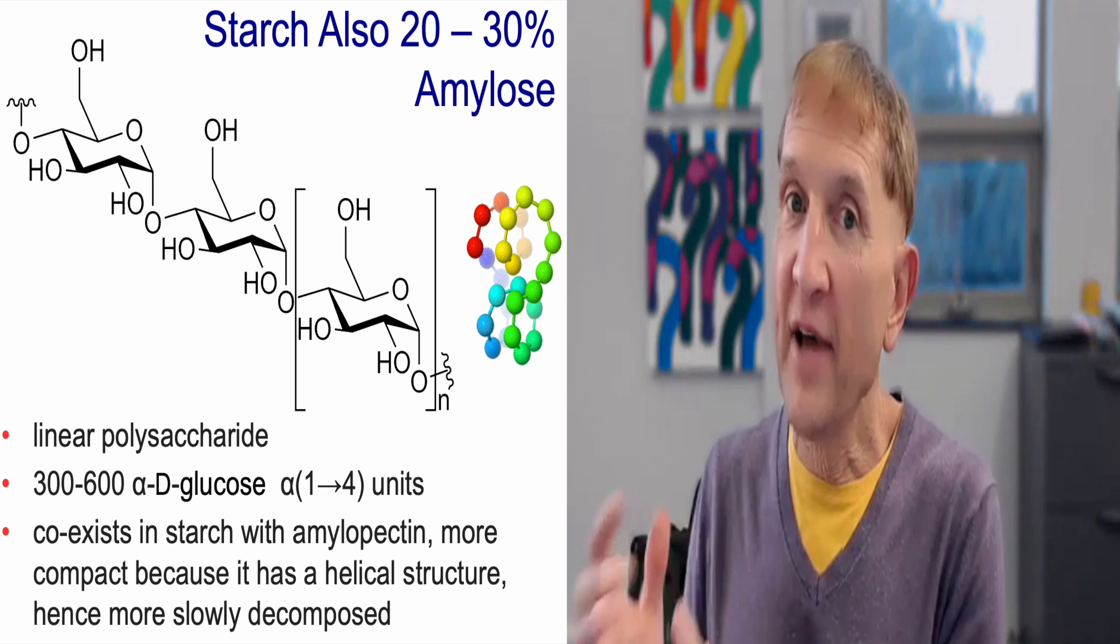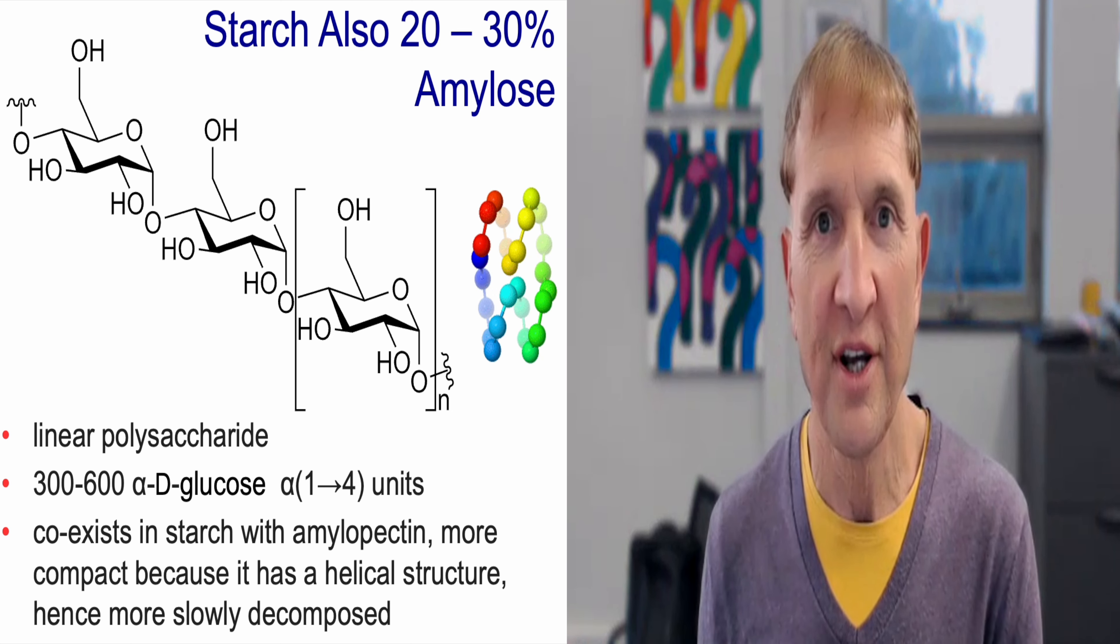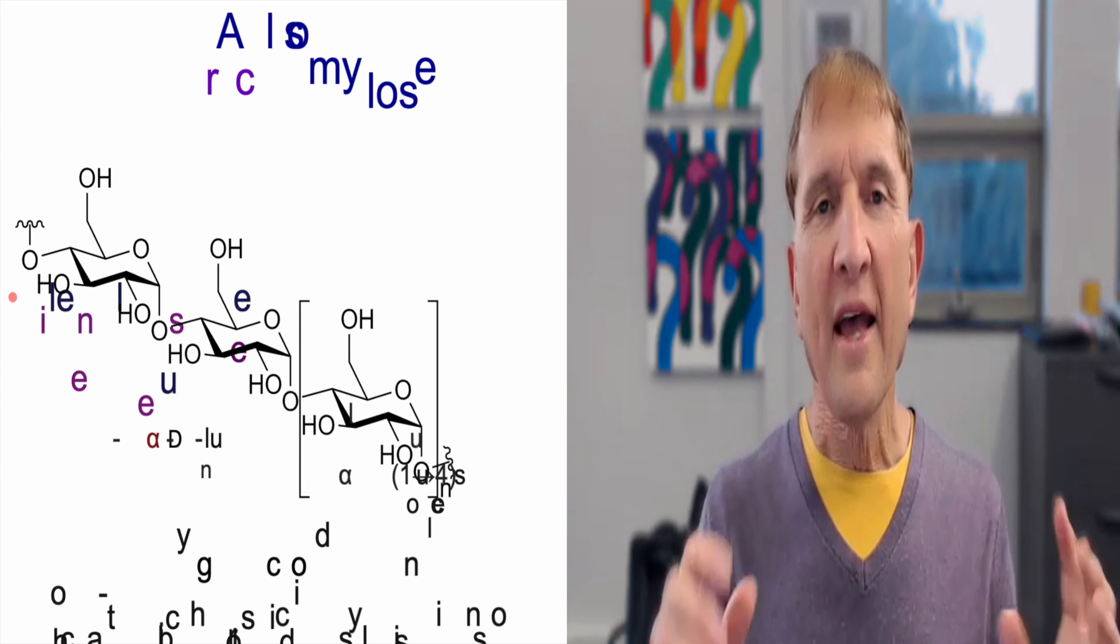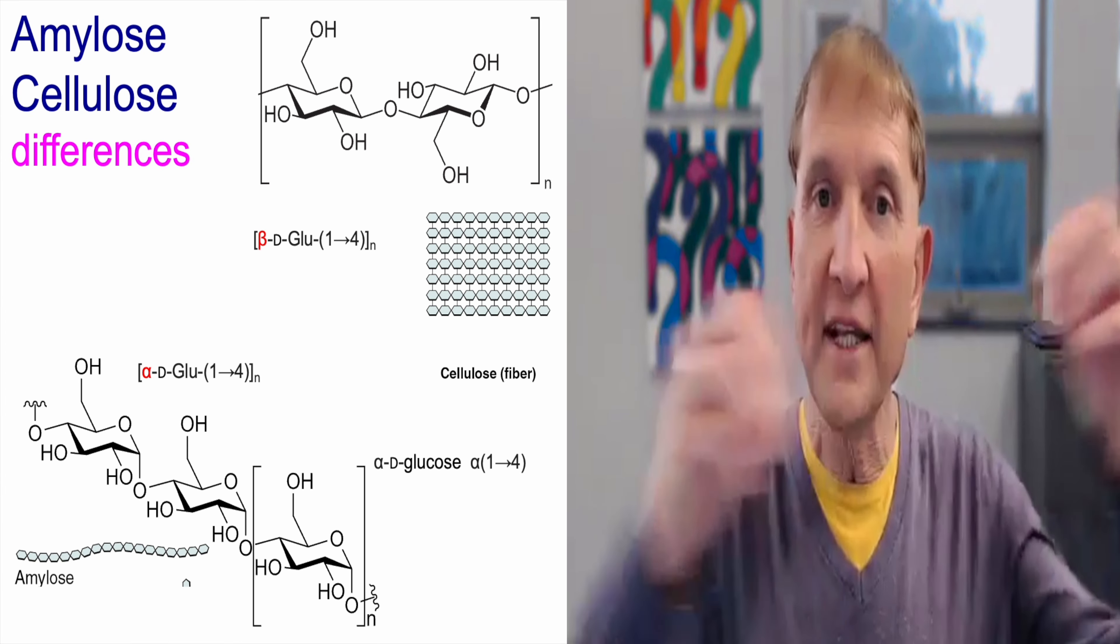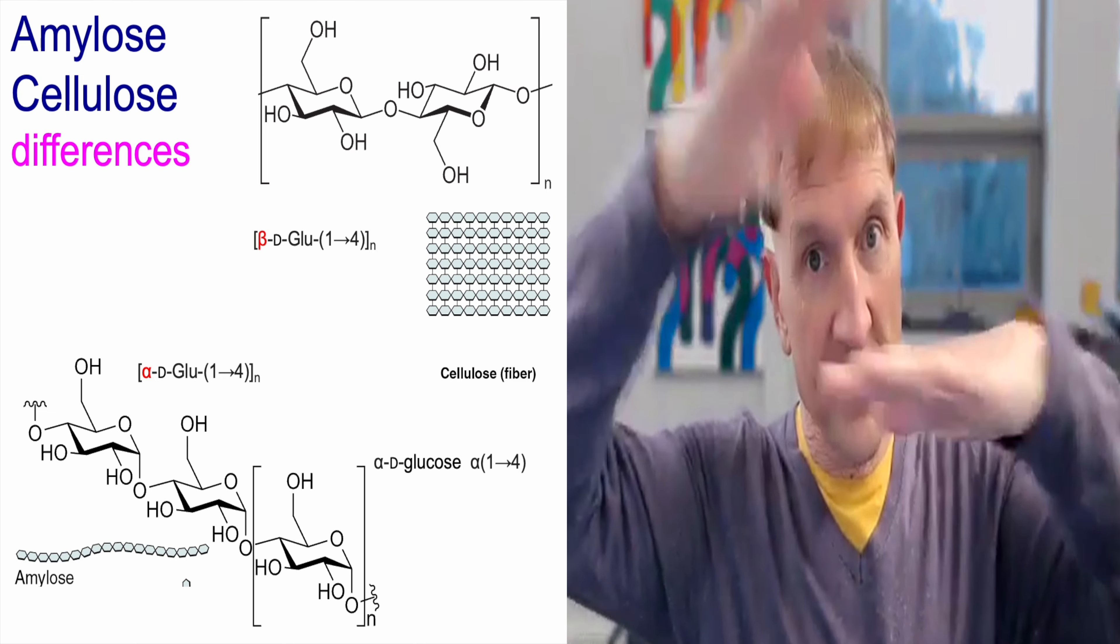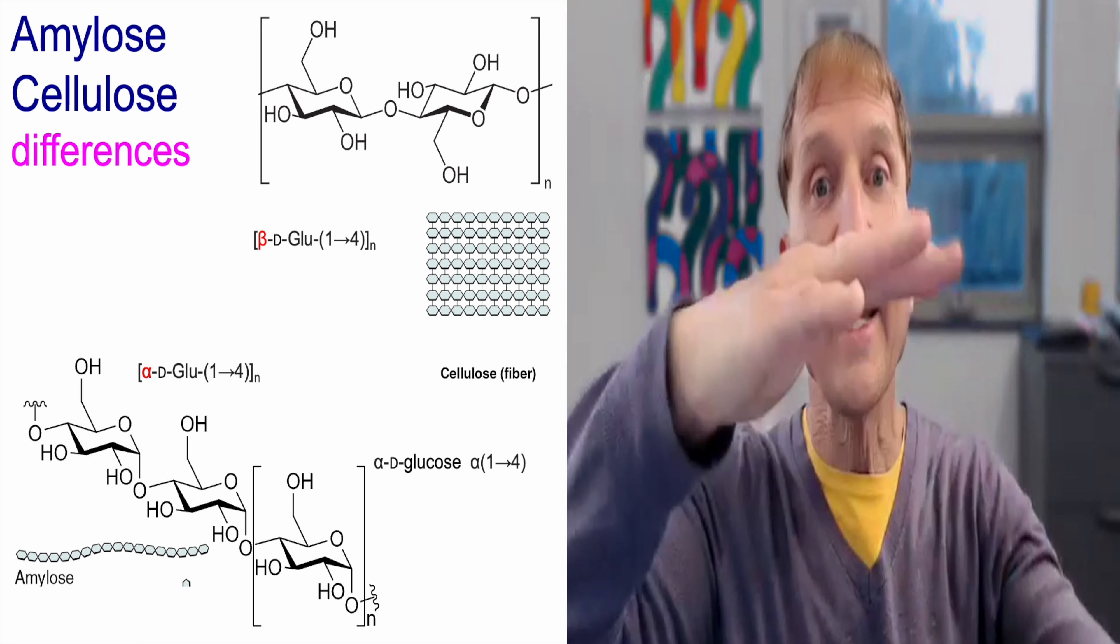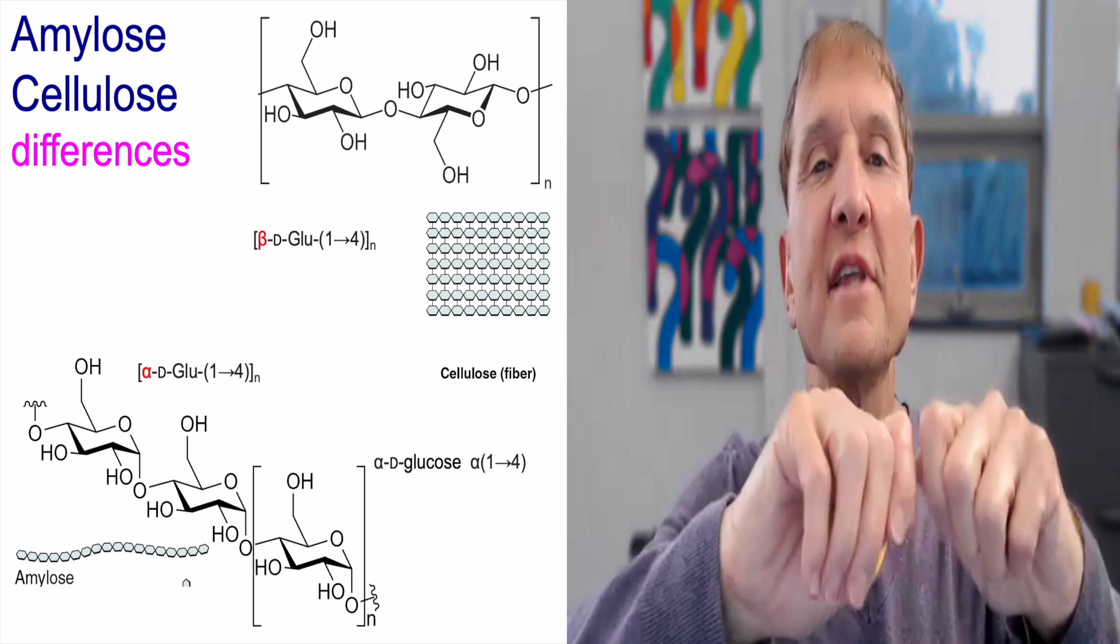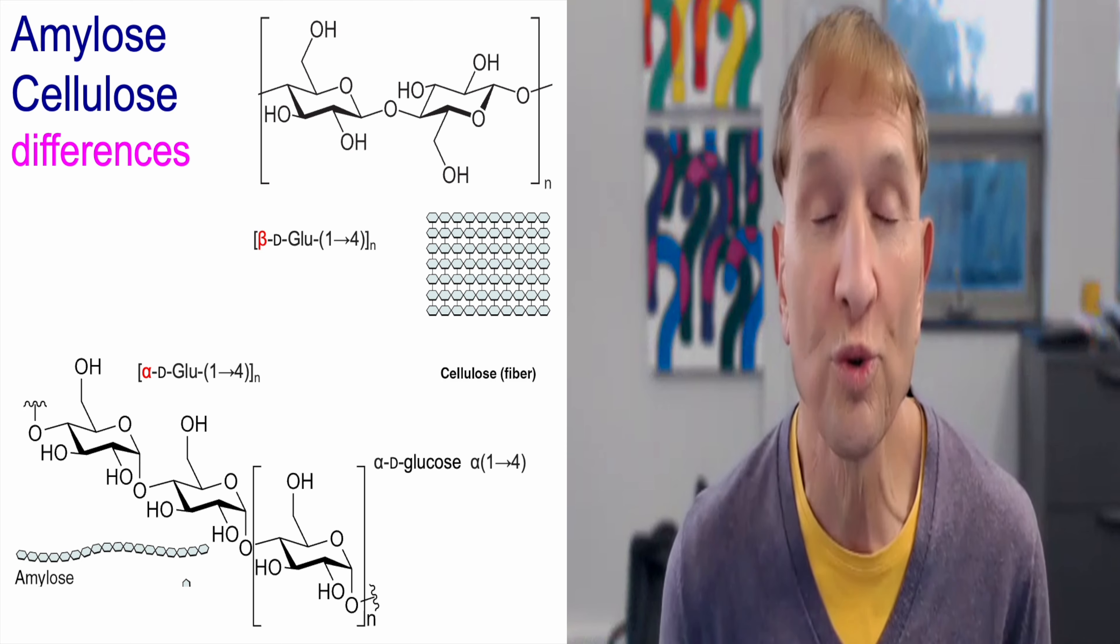But of course, if animals or we eat plants, we take in that starch and we hydrolyze it. Cellulose is another polysaccharide and it's a linear chain of glucose again. And these linear chains of glucose, if there's no amylopectin in the way, they can stack nicely. They give a stiff fibrous material that plants use to comprise cell walls.